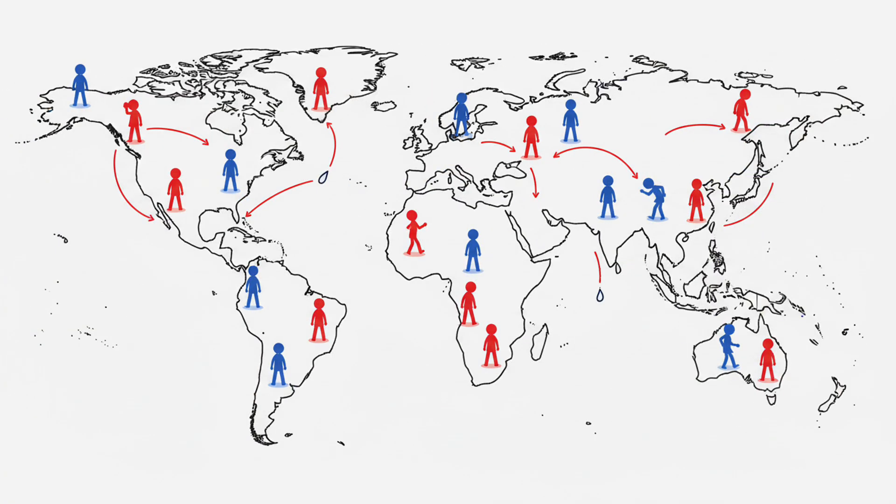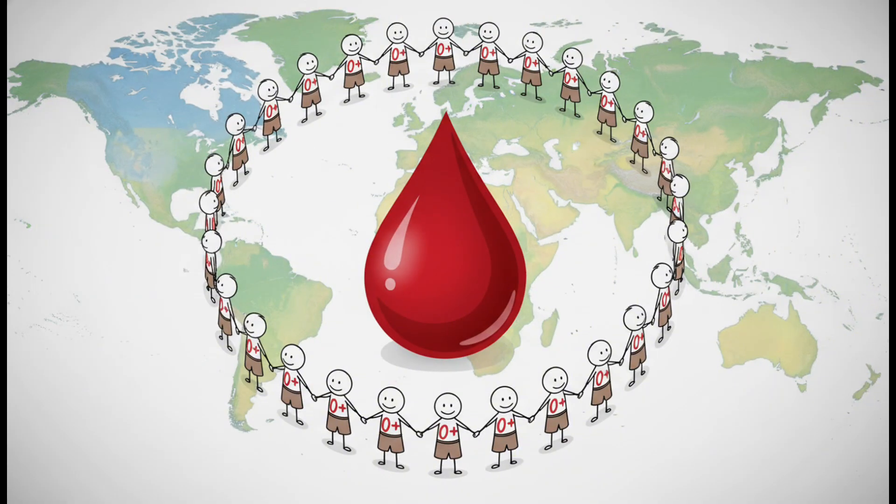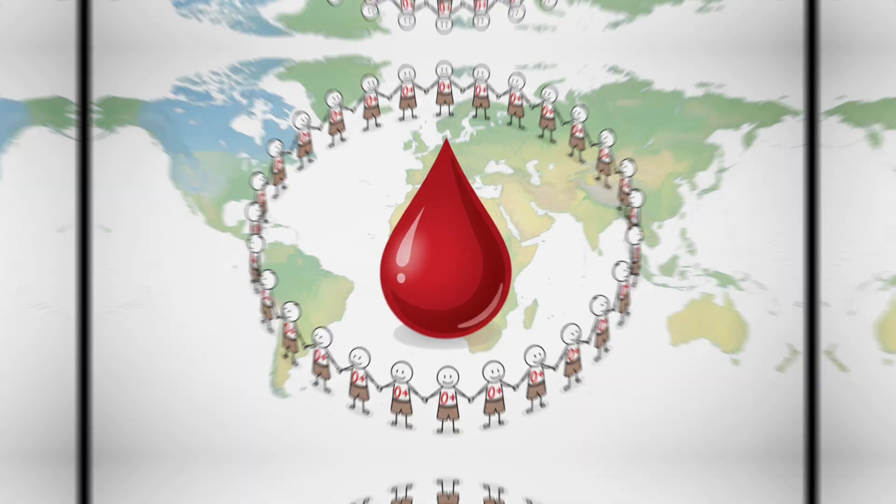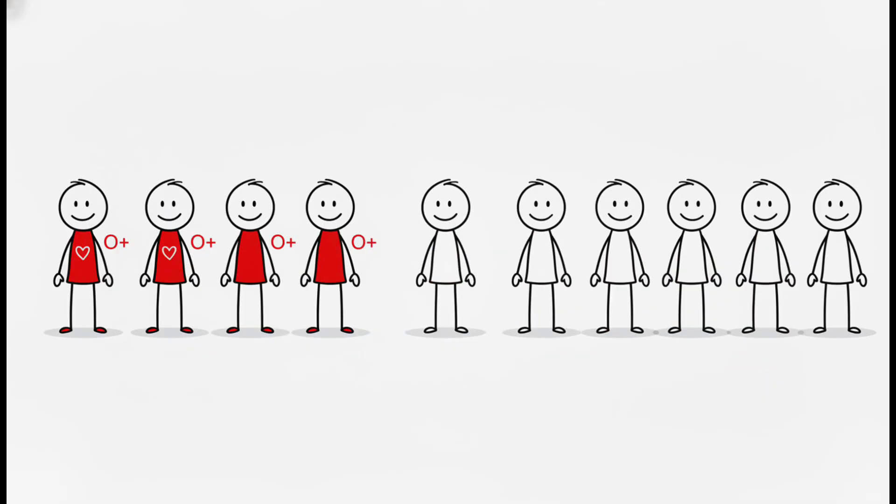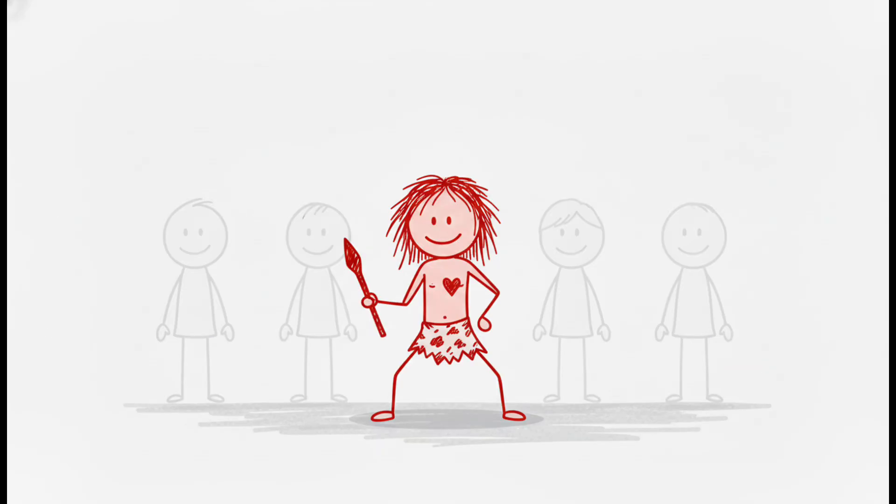O positive. Before borders, before empires, humanity had one dominant blood type. O positive flows through 4 out of every 10 people on Earth. It's not just common, it's ancient.